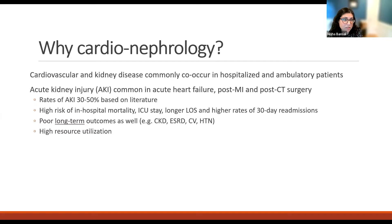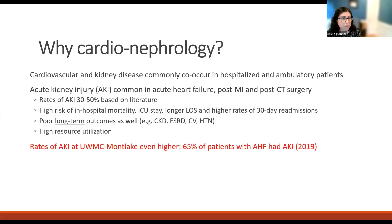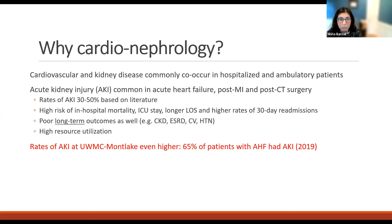We've also seen AKI linked with poor long-term outcomes, including progressive loss of kidney function to CKD and end-stage kidney disease, development of subsequent cardiovascular disease, as well as hypertension. And because of this, AKI as a hospitalization requires high resources. So we dove into the UW data a little bit more to see what was happening on the Montlake campus, because there is such a high cardiovascular population on that campus. In 2019, looking at patients admitted with a primary diagnosis of heart failure, 65 percent actually developed AKI during the hospitalization — really high.